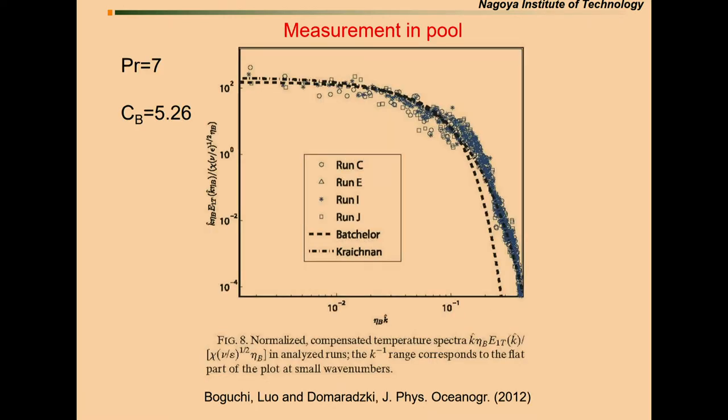Now, this is the measurement data. Prandtl number is 7. This is the data. And this is the Batchelor spectra. And the Kraichnan spectra, the curve is like this one. Very close to each other.